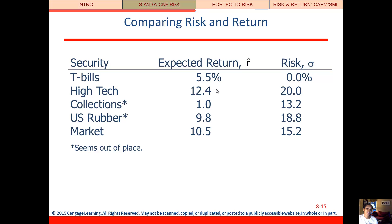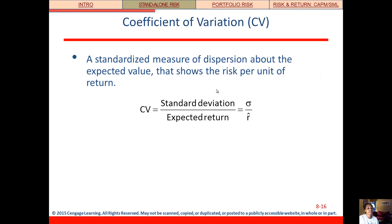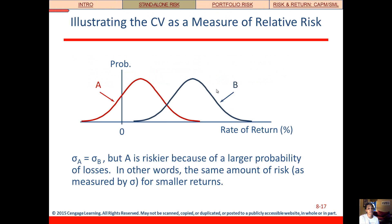With this information, which security would you choose? The one with the highest expected return — high-tech — or the one with the lowest risk, like T-bills or collections? We need a measure that allows us to consider expected return and standard deviation simultaneously. That's what the coefficient of variation does — it measures risk per unit of return. Most of us want the least amount of risk for a given amount of return, which means we want the coefficient of variation to be as low as possible.